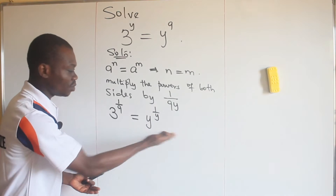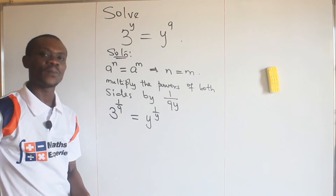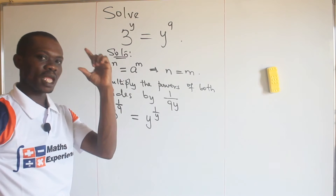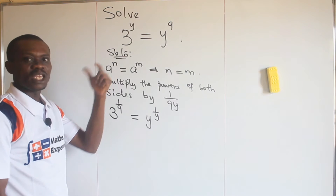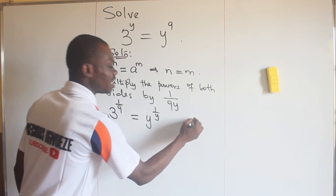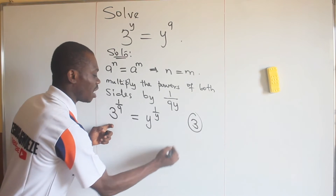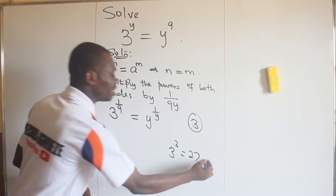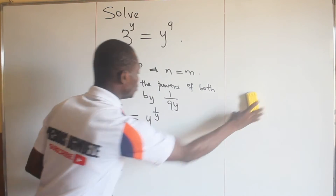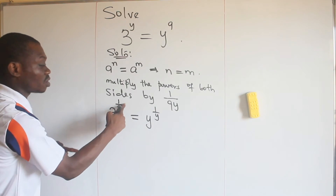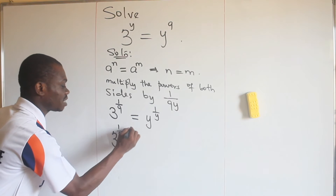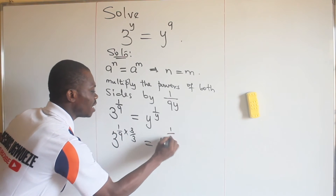Our intent now is to get the left hand side into that form. We are going to look for a number that will multiply nine, and if you use the same number as a power of three you will get the same thing. That number is three: if I raise three to the power of three that gives me 27, and nine times three is also 27. So we use three over three to multiply the power on the left hand side, giving us 3 raised to the power of one over nine times three over three.